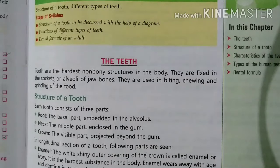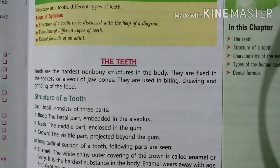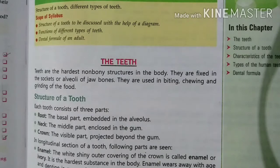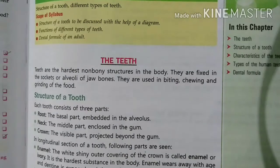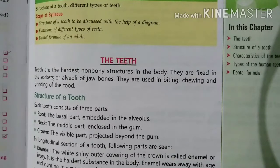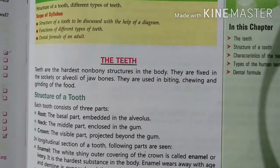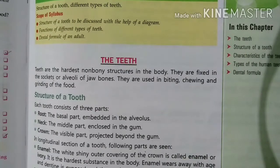Teeth are the hardest non-bony structure present in our body. They are fixed in the sockets and alveoli of jaw bones. They are used in biting, chewing and grinding of food.